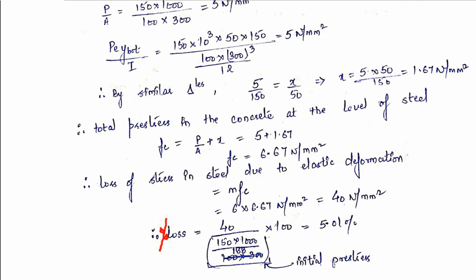Now we calculate the percentage loss. The initial pre-stress = P / area of steel wires = (150 × 1000) / 188 = 797.9 N/mm². Percentage loss = (loss / initial pre-stress) × 100 = (40 / 797.9) × 100 ≈ 5.01%. Therefore, the total percentage loss due to elastic deformation of concrete is 5.01%.